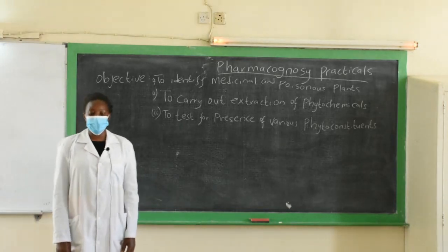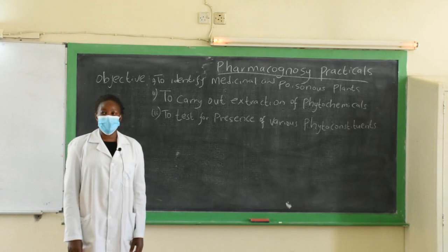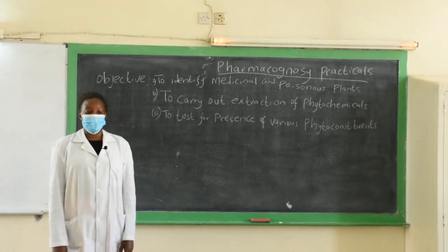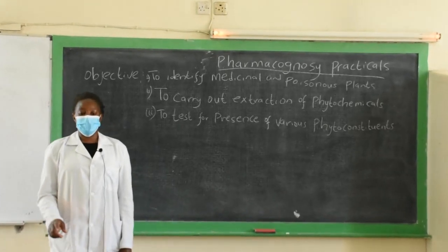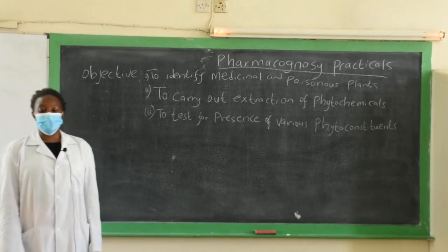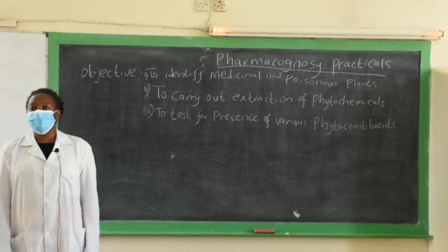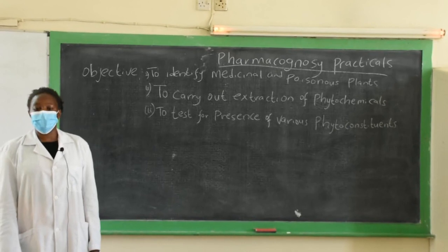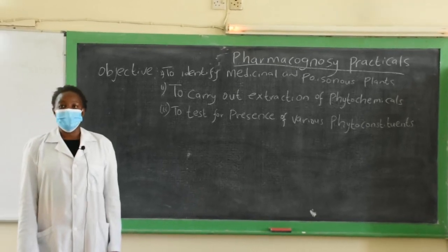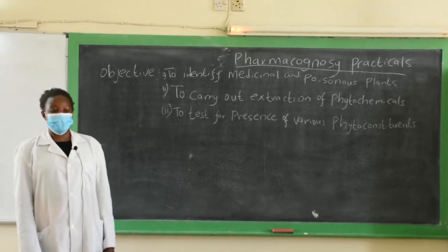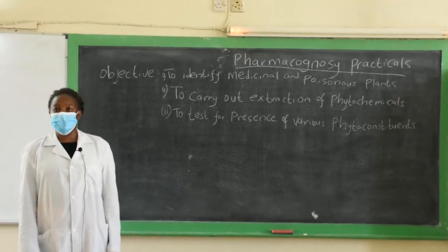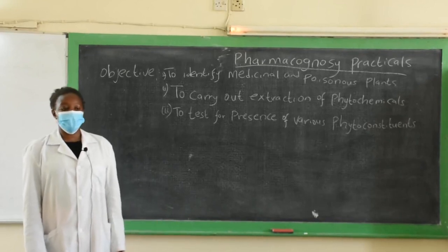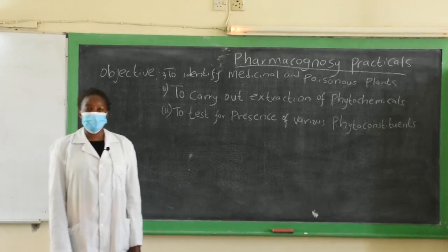The first practical is going to be identification of medicinal and poisonous plants, where we will show you the various plants that are sources of medicines. We will also see plants that are poisonous and be able to relate what is the poisonous consequence in them.